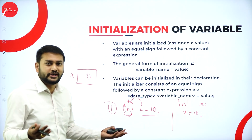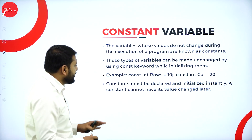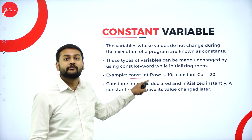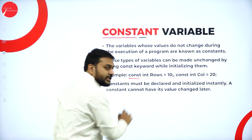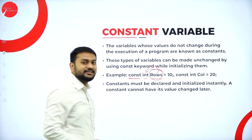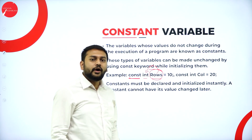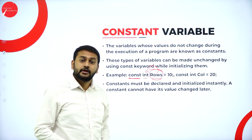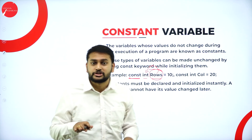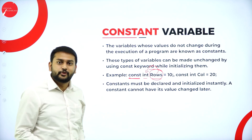Moving forward to the next topic — constant variable. It is one of the best topics you need to remember. C-O-N-S-T is the keyword that you have to use before you mention the type of the variable. For example, 'const int rows' — rows is a variable of type int, but I have made it constant by mentioning the keyword const. The speciality is that the value of this variable stays constant throughout the execution of the program — the value will never change.